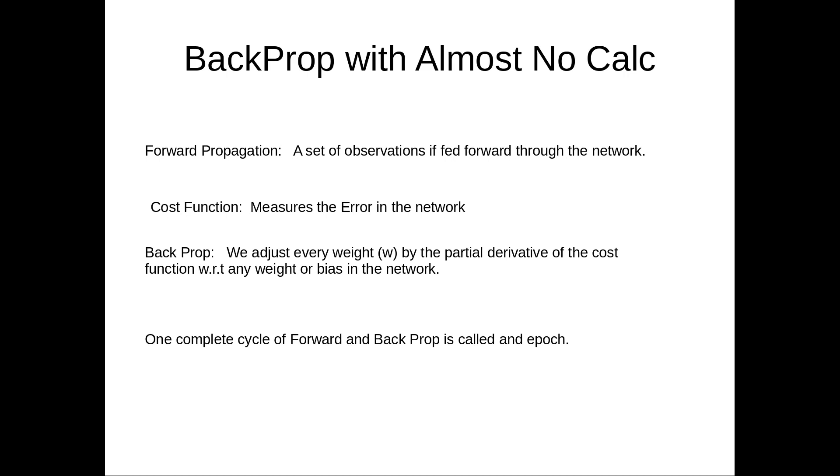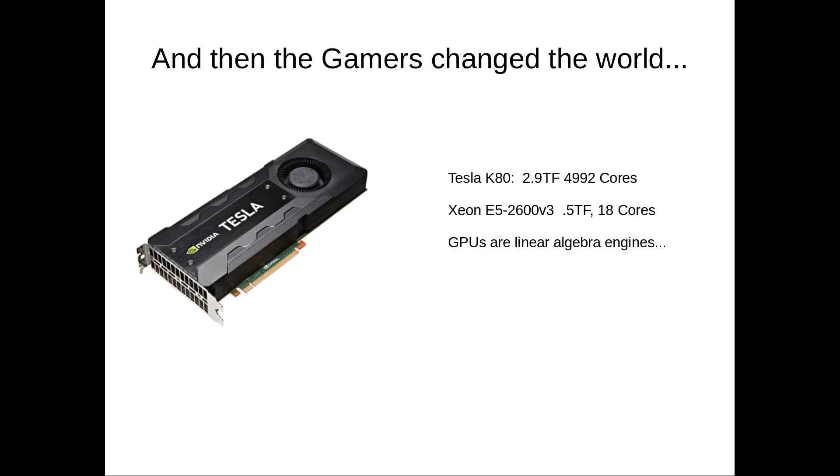But then something great happened - the gamers came along and they changed the world for us in neural networks. What the gamers brought with them were video cards, graphics processors made to run video games. The thing about these GPUs is that they're just built to do linear algebra. They're linear algebra specific machines - that's what they do better than anything else. If you think about it, the physics of a video game are very much a linear algebra problem.